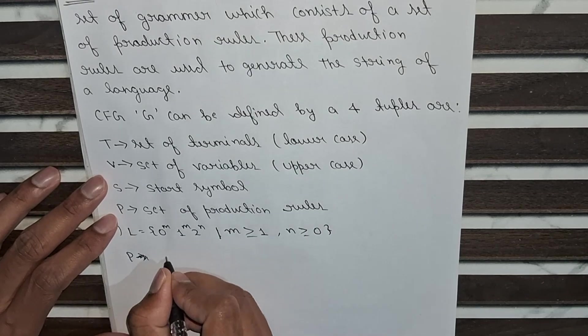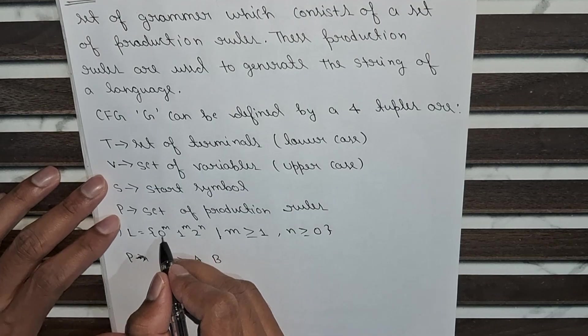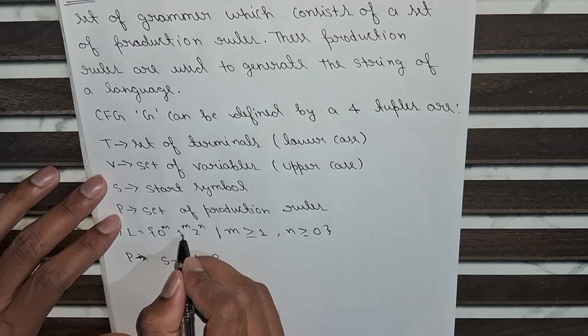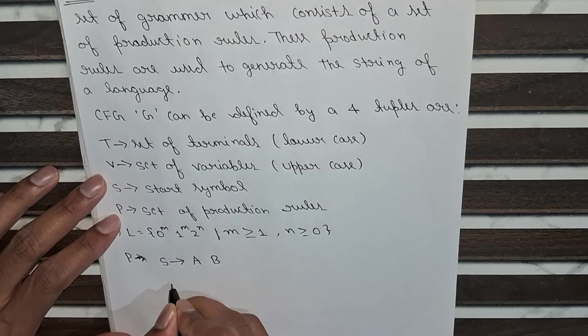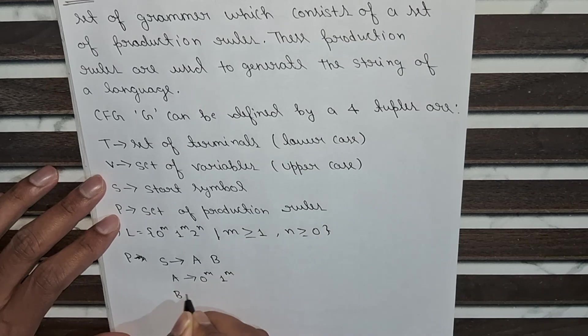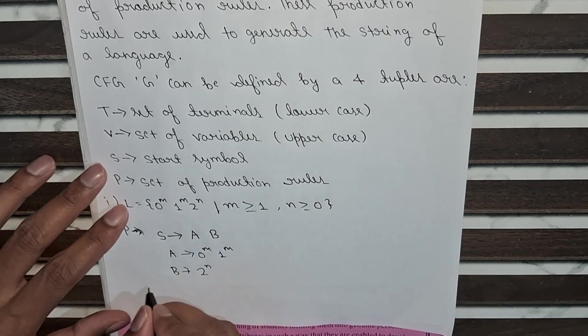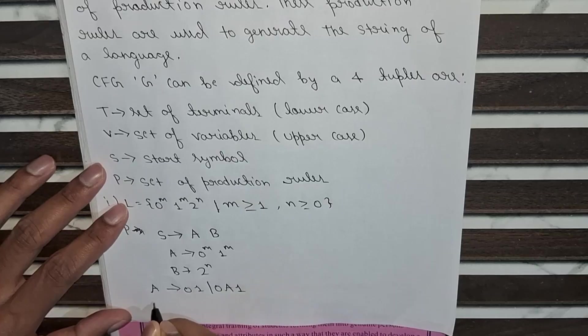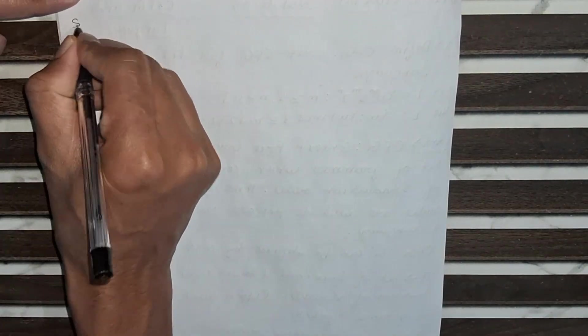So first of all we will write the production. The production will be like starting symbol is S, we will mark A and B. Here we can see that 0 is m number of times and 1 is also m number of times, so 0 and 1 will be the same. And 2 will be n number of times. So we will let A equal to 0 to the power m and 1 to the power m, and B will be denoted to 2 to the power n. So how we will denote this in context-free grammar: we will write A as 01 or 0A1, and B equals epsilon or 2B.